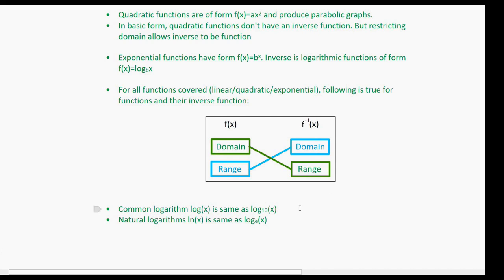Lastly, we looked at two different types of logarithms. The first is the common logarithm, log x, which has a base of 10 that is usually omitted. The second is the natural logarithm, ln x, which is the same as log x with a base of e. And that's everything.